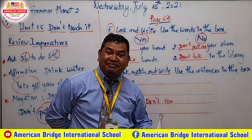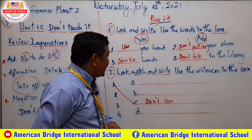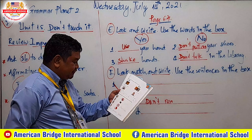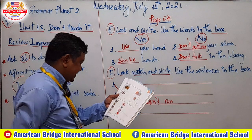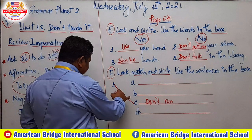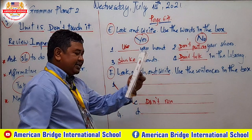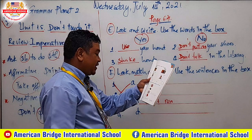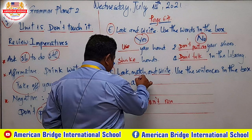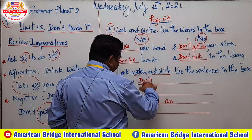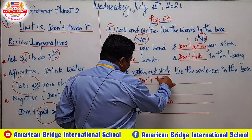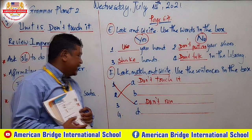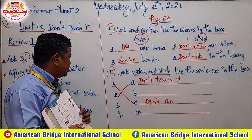If you touch it, it can be dangerous. So number two goes with letter A — the sentence is 'don't touch it.' When you touch it, it is dangerous. So you have to write 'don't touch it.'